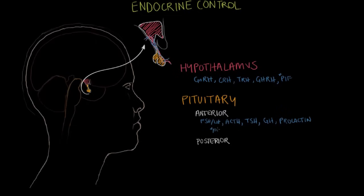There's a nice mnemonic — FLAT PEG — which helps remember which hormones are which. FSH, LH, ACTH, and TSH are the FLAT hormones, and they are called tropic hormones. Tropic hormones are hormones that stimulate other endocrine glands. PEG hormones are the direct hormones and include prolactin and growth hormone; E is for endorphins, which the anterior pituitary does release, but so do many other parts of the body. Direct hormones stimulate a part of the body directly — growth hormone directly stimulates bones and muscles, and prolactin directly stimulates lactation.